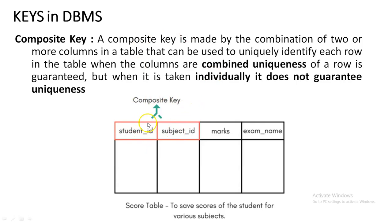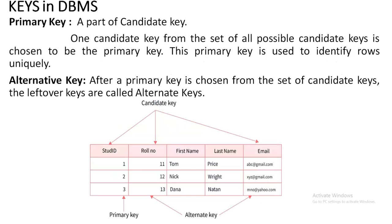The Composite Key works only as a combination. Whenever you divide the two columns separately, they cannot retrieve a unique value, because only together do they play the role of unique columns. For example, Student1 with SubjectID 101 has a certain mark; Student2 with SubjectID 202 has another mark. Whenever you consider both columns as a key, you get a unique value. If separated, it cannot provide a meaningful unique value.